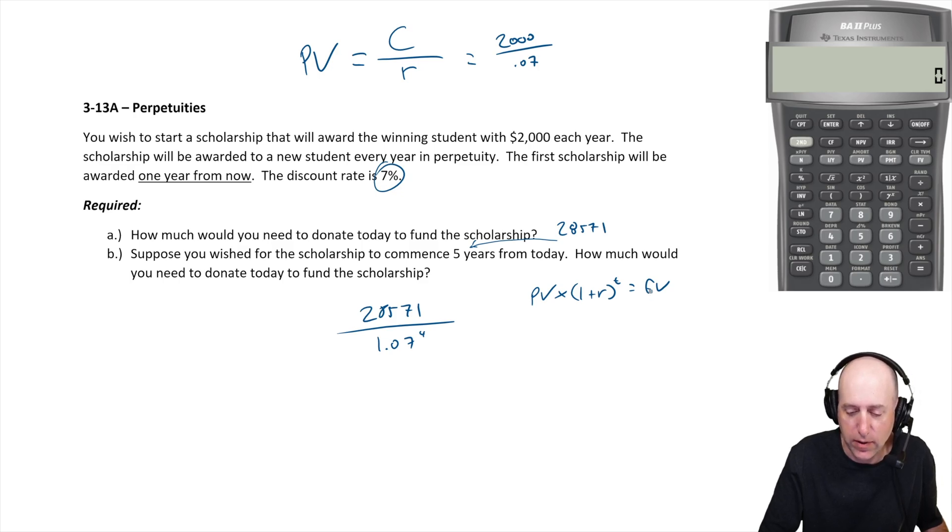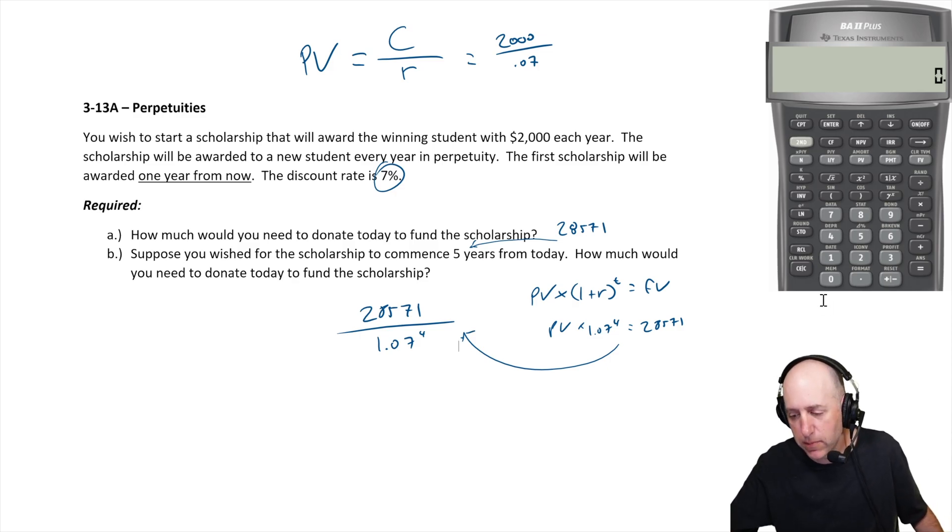Okay, so in this circumstance, we know our FV is 28,571. We know one plus r to the t is 1.07 to the fourth, and we don't know our PV. That's how much we got to put away today. So that's how we sort of rearrange to get to here: 1.07 to the power of four.